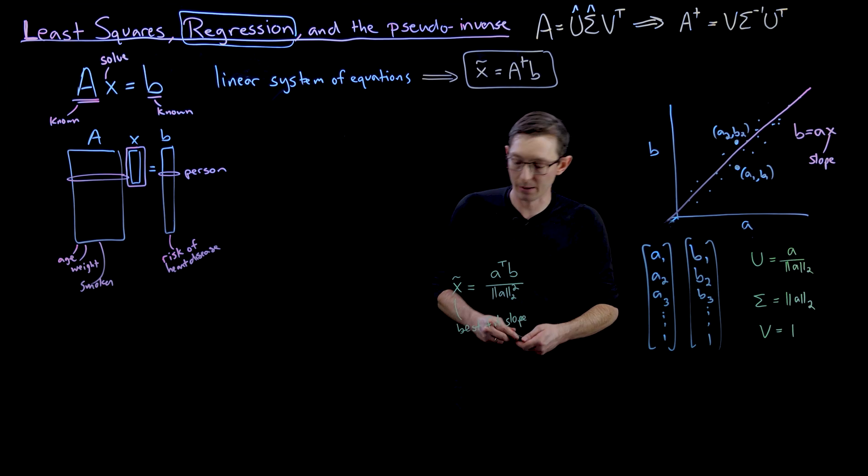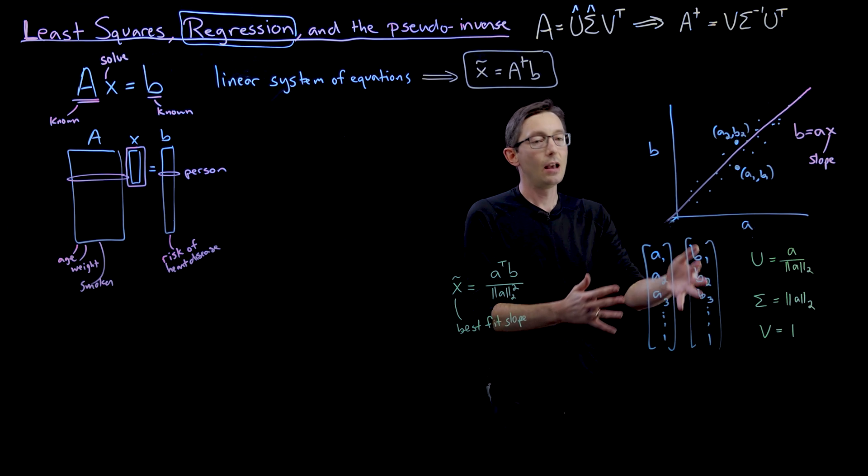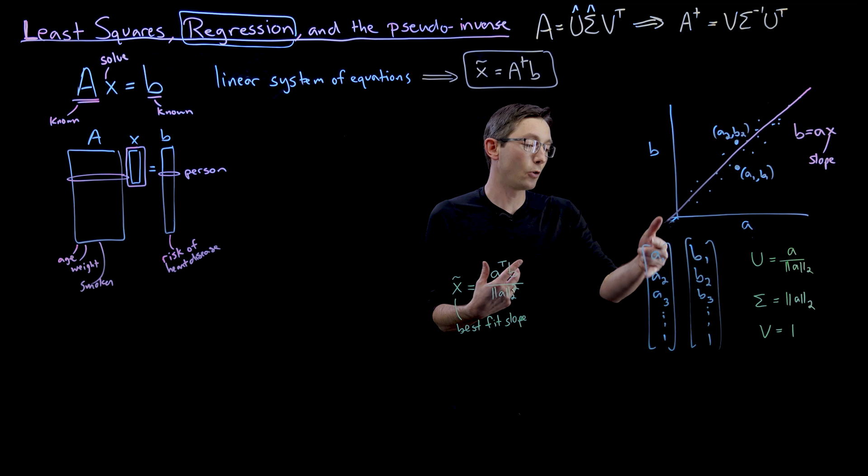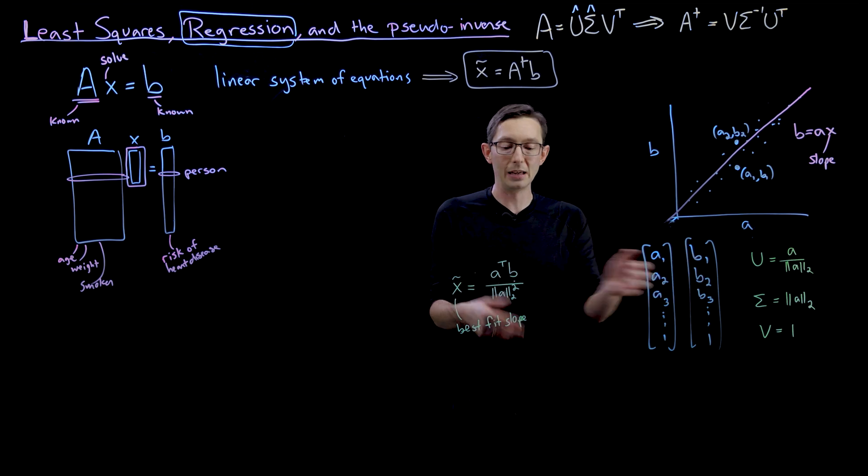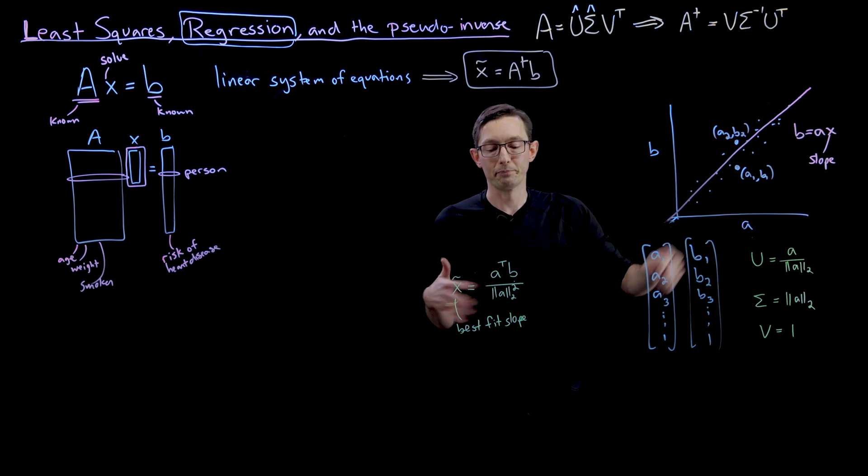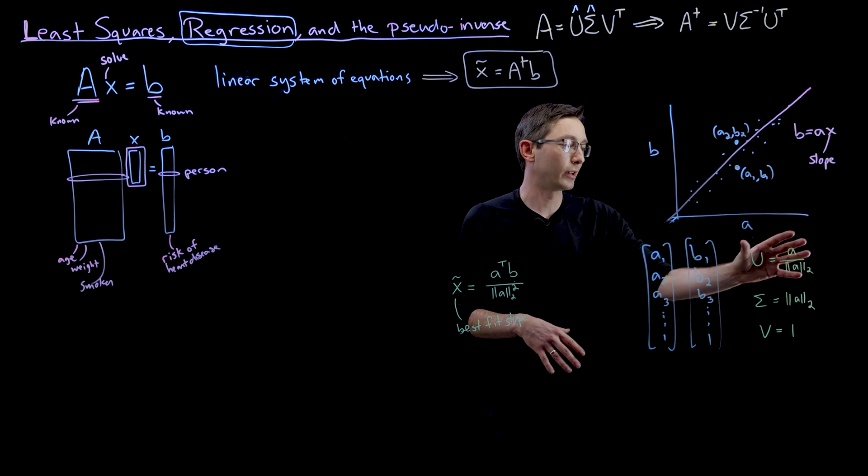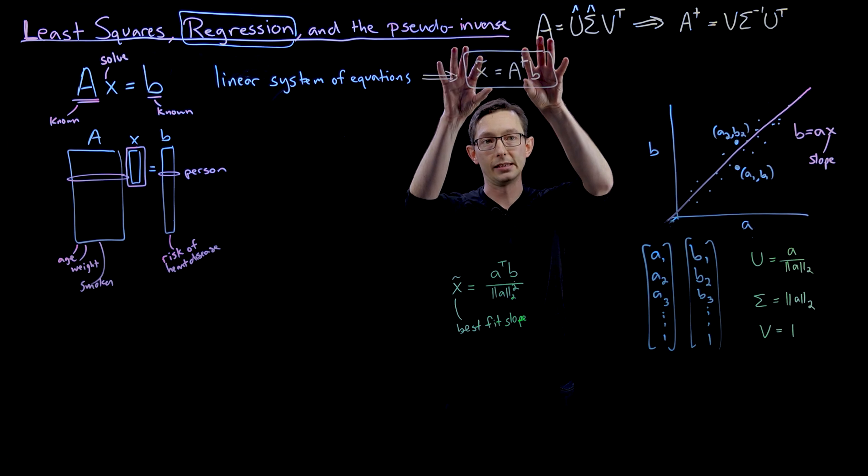And it kind of makes sense, right? What I'm going to do is I'm going to basically take B, all of the B data, and project it into the direction of A, that's what this is. And then I'm going to normalize that A vector by its length. And I'm going to normalize the B vector by its length, because I'm going to multiply that slope by A to get B. So this is the best fit line.